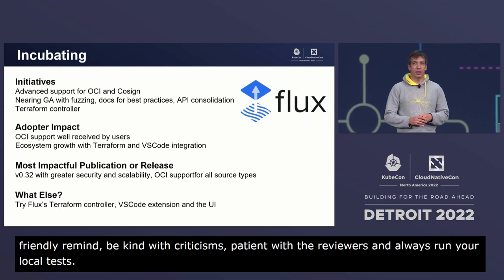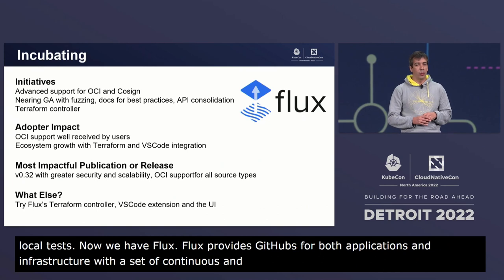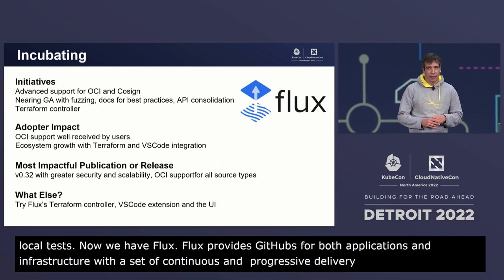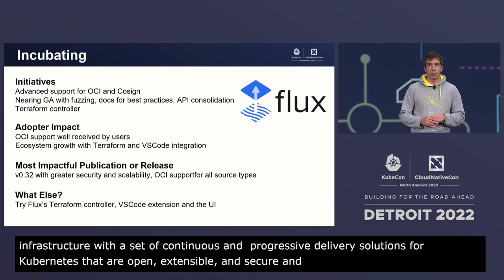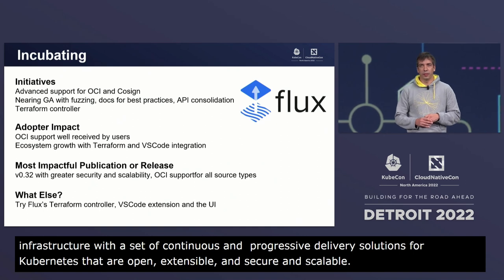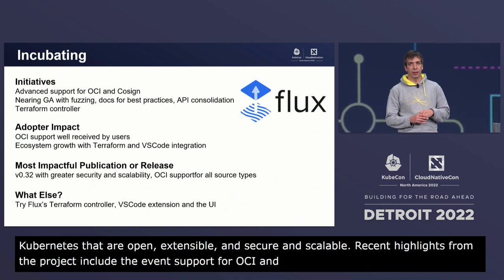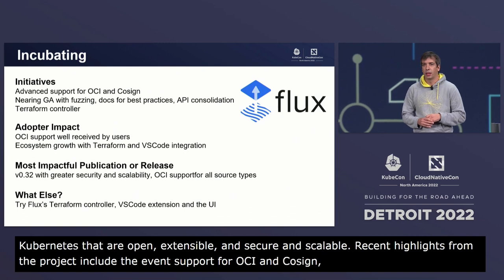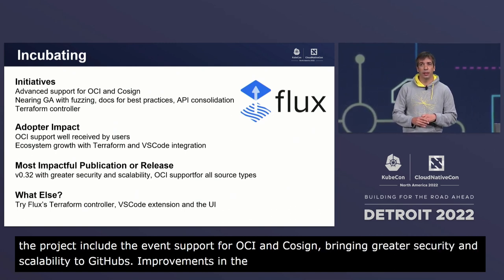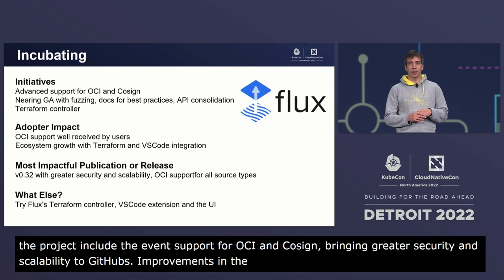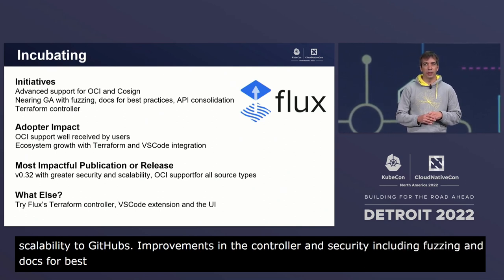Now we have Flux. Flux provides continuous and progressive delivery solutions for Kubernetes — for both applications and infrastructure — that are open, extensible, secure, and scalable. Recent highlights from the project include advanced support for OCI and Cosign, bringing greater security and scalability to GitOps, improvements in the controller and security including fuzzing and docs for best practices, as well as API consolidation putting it near GA.